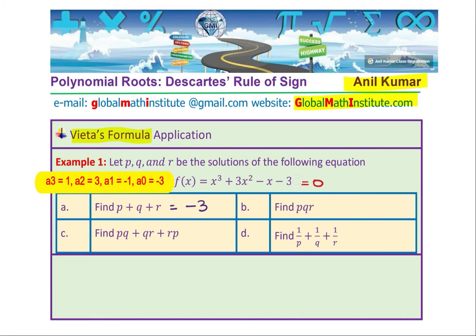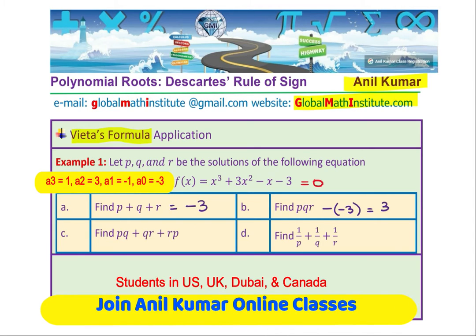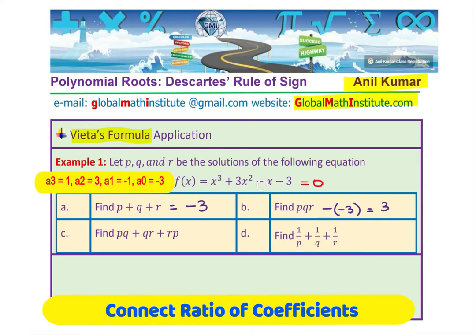The product of roots is A0, the constant, over A(n), and the sign will be negative of negative 3, which is positive 3. The symmetric sum of products of two roots — PQ + QR + RP — will be the coefficient of x divided by A3. So in this case, it is going to be equal to minus 1.